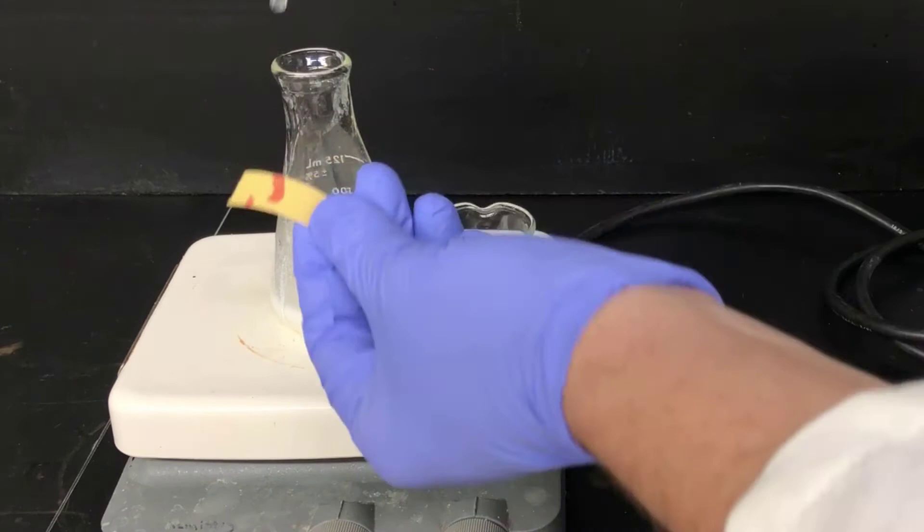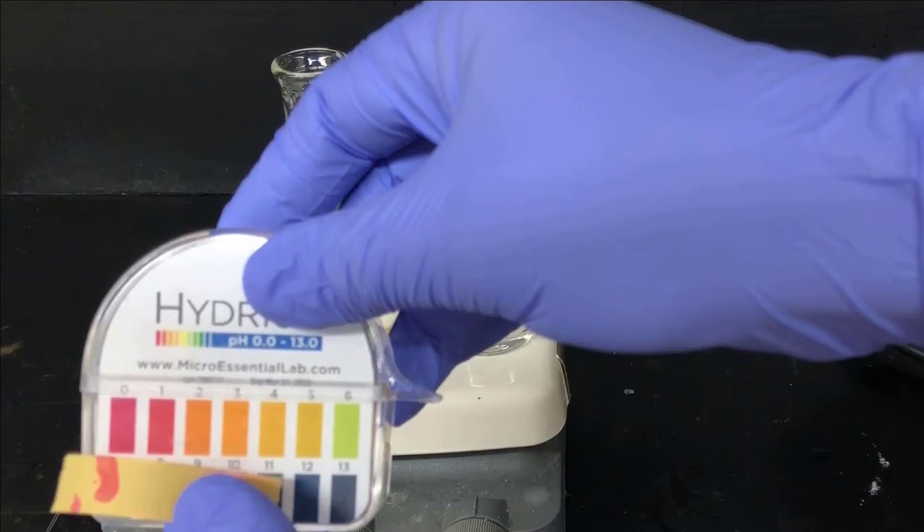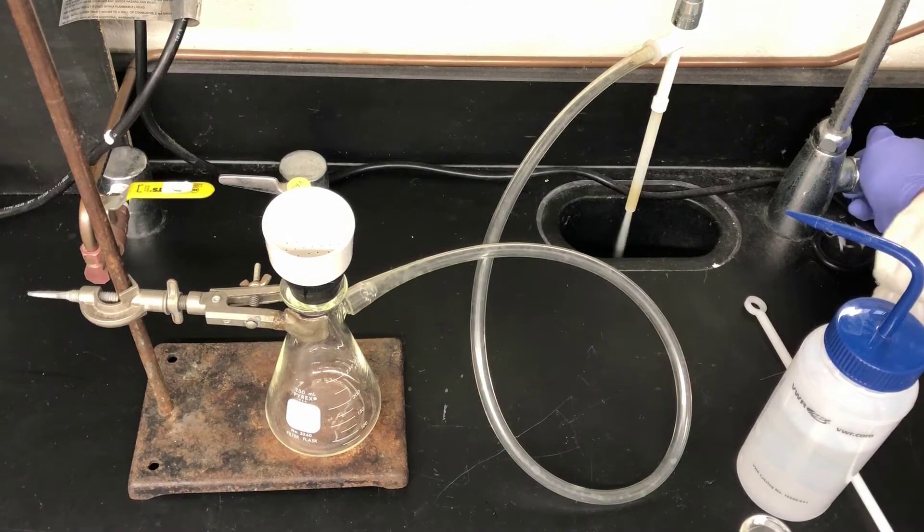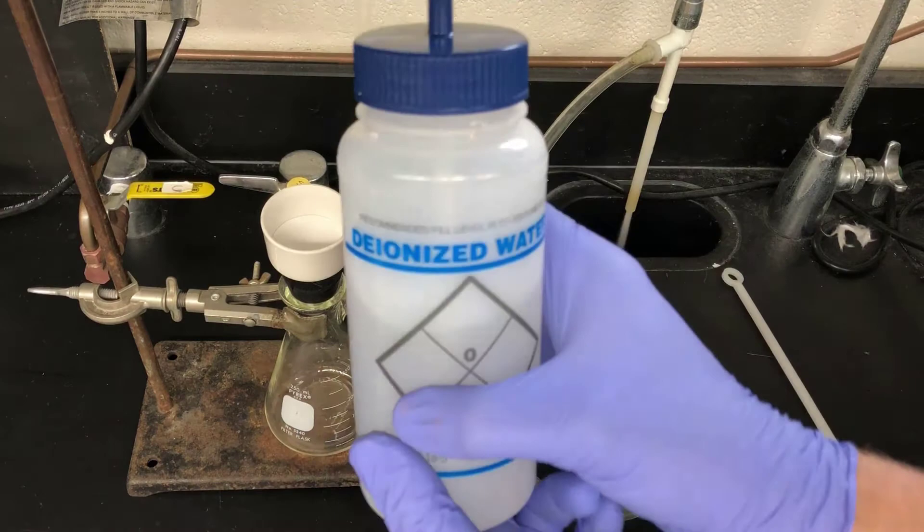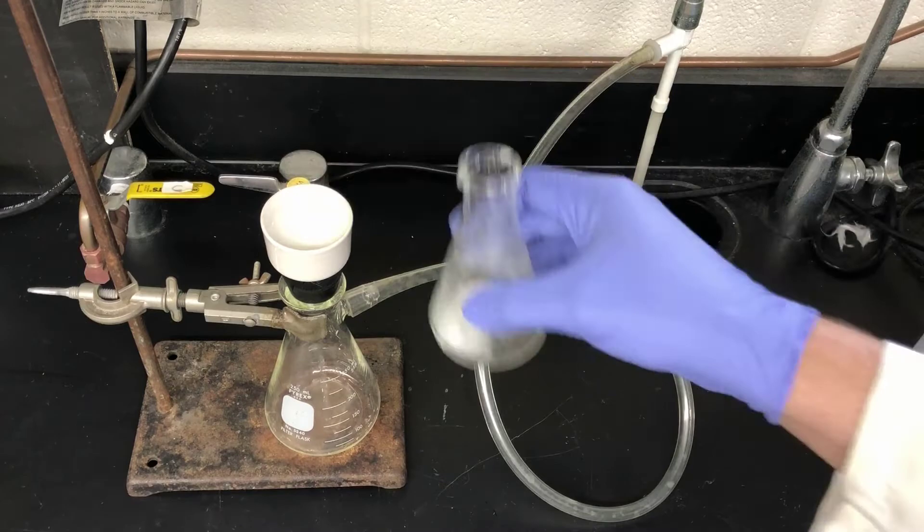Now I'll be vacuum filtering the product to remove it from the water. I'll turn on a water aspirator, get my Buchner funnel, add a piece of filter paper to it, put it back on the filter flask, and wet it with a little bit of water to seat the filter paper against the holes in the Buchner funnel. Now I'm filtering my benzoic acid product. I'll rinse the Erlenmeyer flask with some deionized water to try to get more of the benzoic acid transferred into the Buchner funnel.